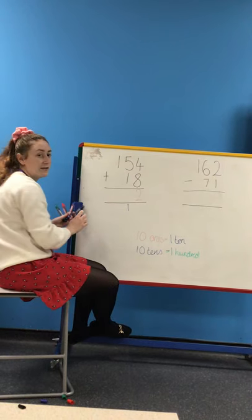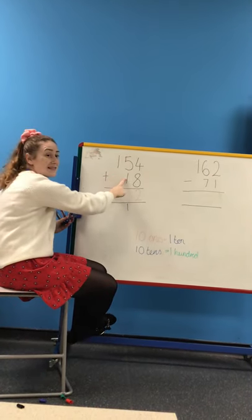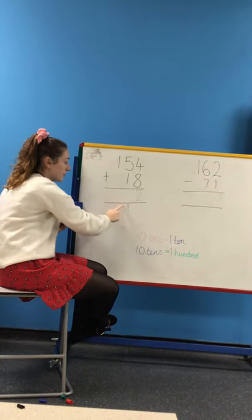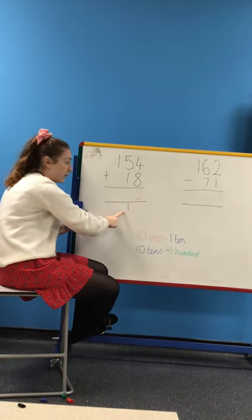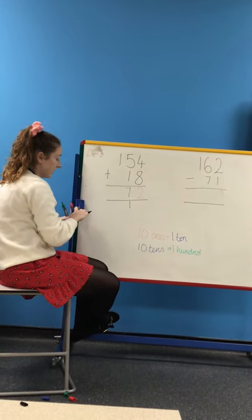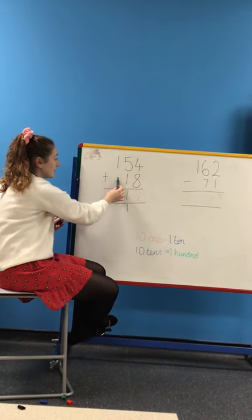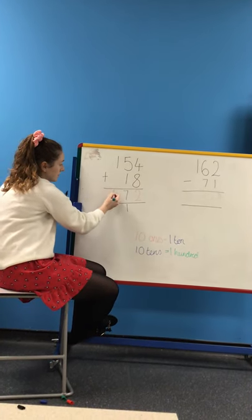So once we've done that, we can then have a look at the tens column. We have 5 plus 1 is 6, and it's important that the children don't forget if there are any numbers at the bottom as well. So we need to add another one, and that would give us 7. Lastly, we can move on to our hundreds. So for this one, we have 1 plus 0, so that would give us 1.